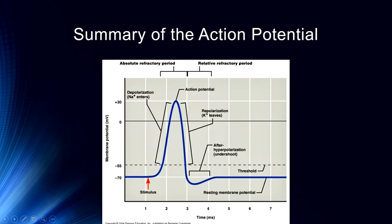Quick summary of the action potential: we have a stimulus, we cross the threshold of excitation, we depolarize the cell, sodium rushes in, we start to repolarize as potassium leaves the cell, then we hyperpolarize — overshooting the target membrane potential — and then return to the normal resting membrane potential. All of this happens within milliseconds.